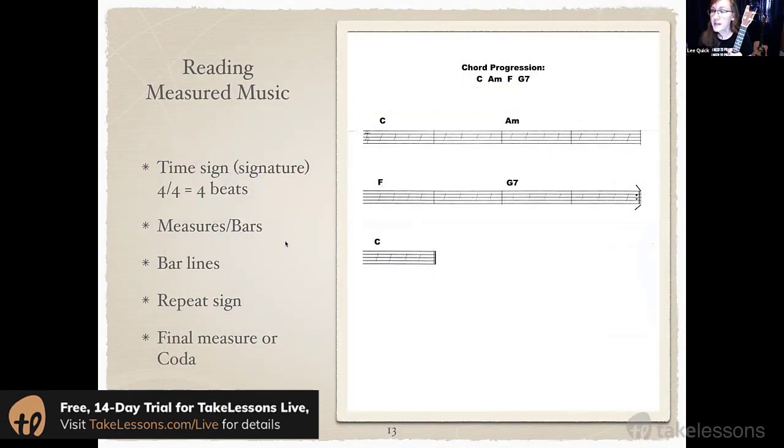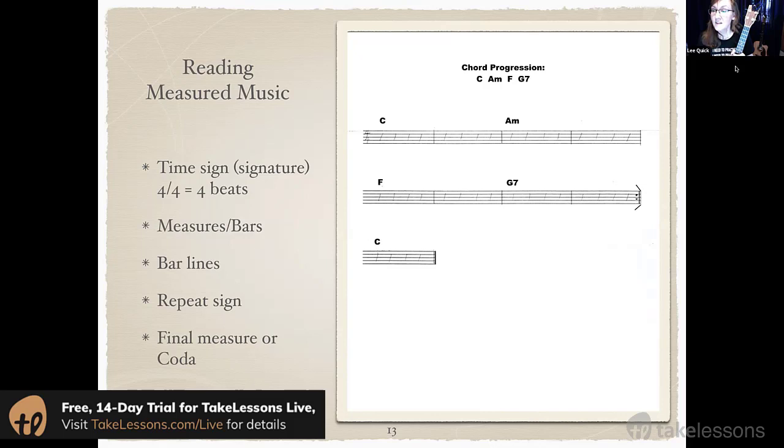Now let's talk about reading actual music. You might see songs that are written out something like this. This is called measured music because it's written out with four beats in each measure. A group of four beats is called a measure, or some musicians call it a bar just because it's a shorter word and easier to say.